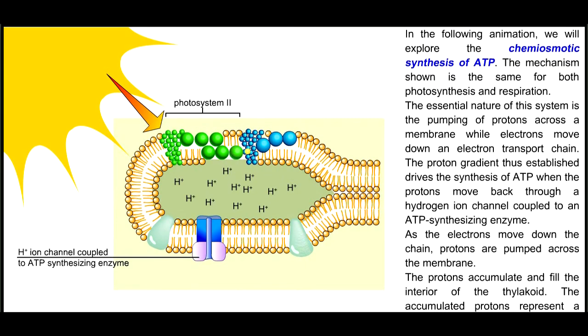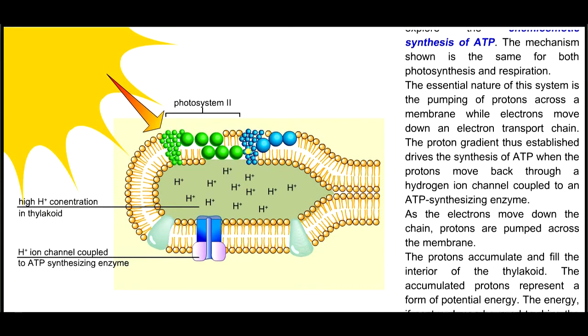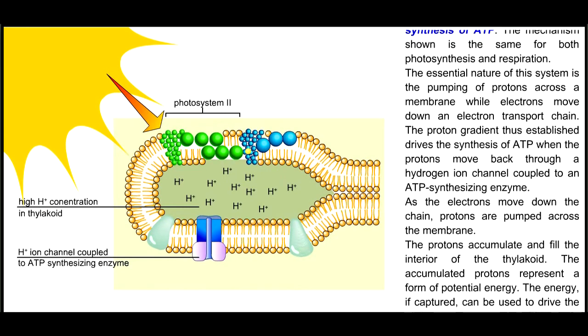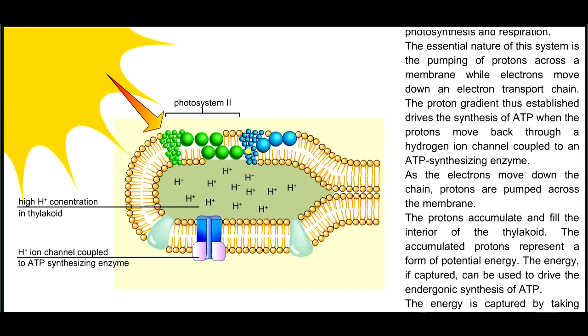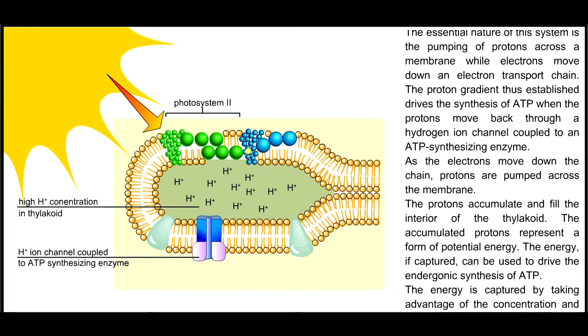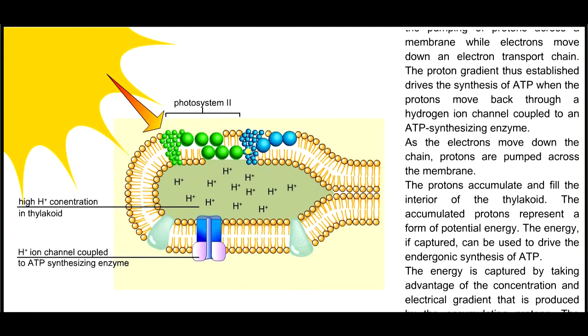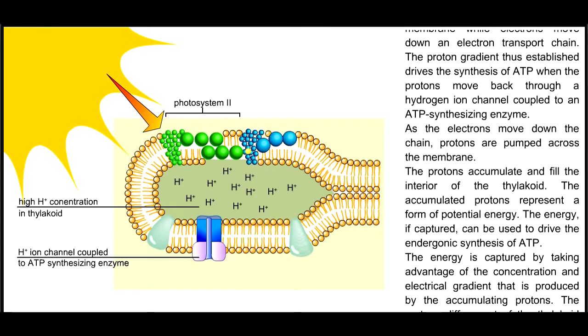The accumulated protons represent a form of potential energy. The energy, if captured, can be used to drive the endergonic synthesis of ATP. The energy is captured by taking advantage of the concentration and electrical gradient that is produced by the accumulating protons.